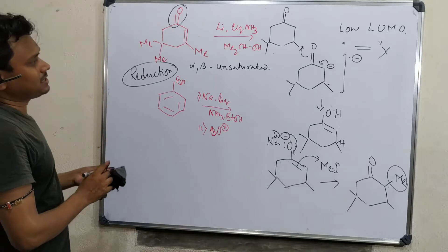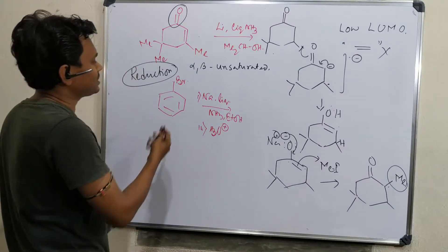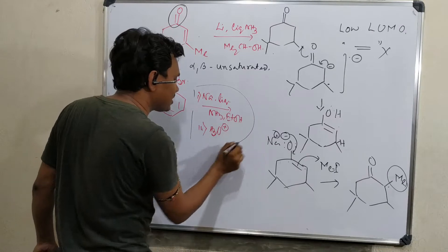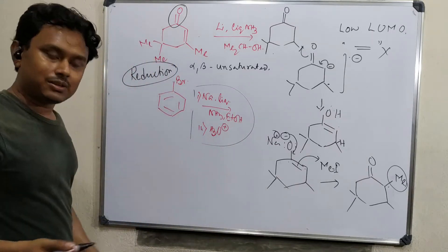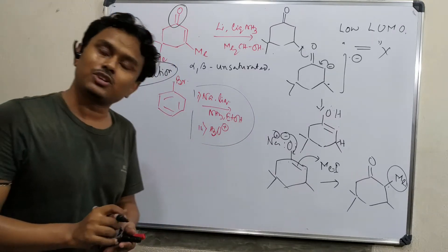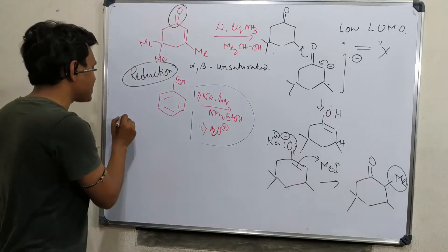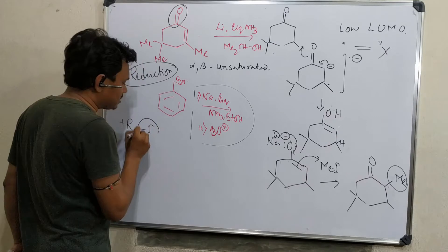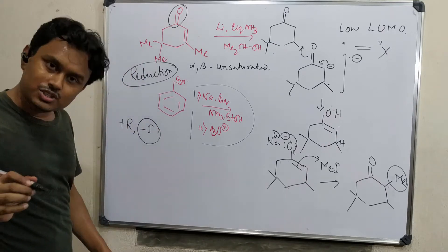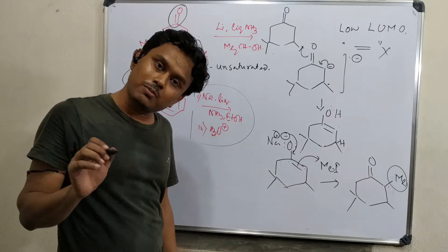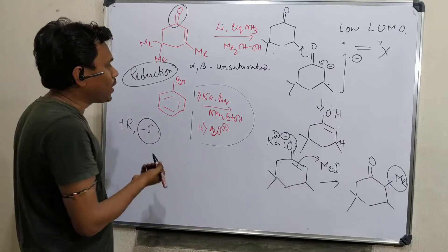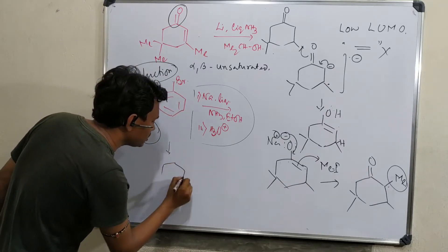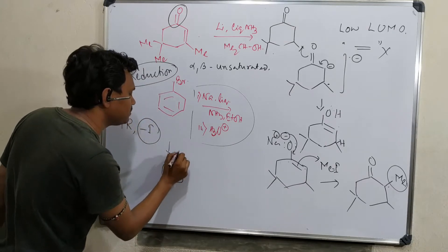Let us discuss the last example: the reaction of bromobenzene under Birch reduction conditions. You might think bromine could be considered as electron withdrawing — it has a plus R effect, but the minus I effect is more dominant. For halogens, minus I is more dominant than plus R. So what happens? We might expect one type of derivative, but actually neither of those is the product.